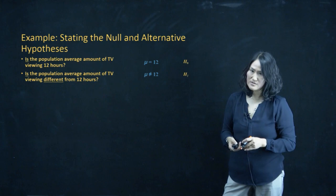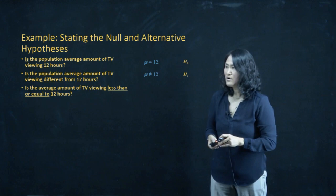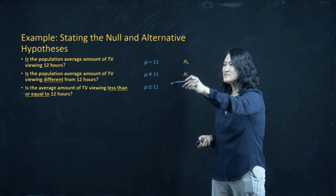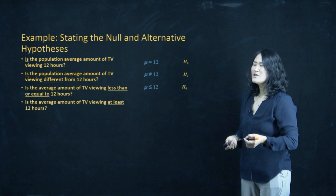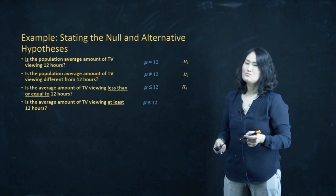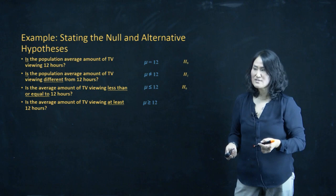The next example: the keyword is 'less than or equals to 12 hours.' We write it as mu ≤ 12, and because we have an equality sign here, it goes to H0. The following example asks if the average amount of TV viewing is at least 12 hours. 'At least' is written as greater than or equals to 12, and since we have an equality sign, this is also H0.